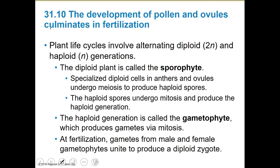Here is where we get into the alternation of generations. I don't ask a whole lot of questions about this, but I want to show you that you still know what's going on. If you're confused, go back to the general alternation of generations cycle. The plant life cycle involves alternating diploid and haploid generations. The diploid plant is the sporophyte — good review for the whole alternation of generations.